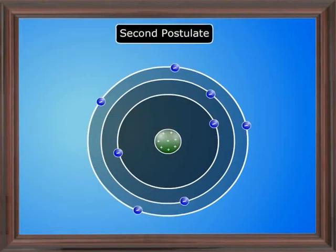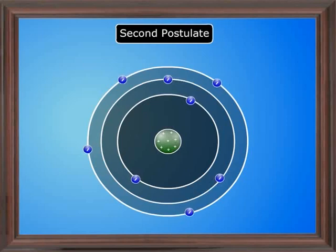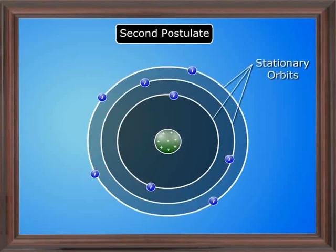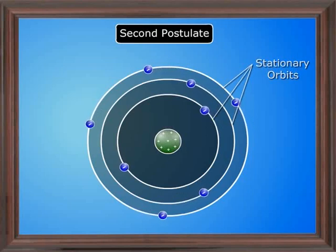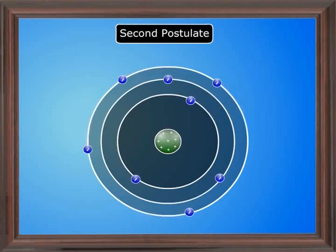Second postulate. The electrons revolve only in permitted orbits called stationary orbits and do not radiate energy while in such orbits. This postulate explains the stability of the atom.